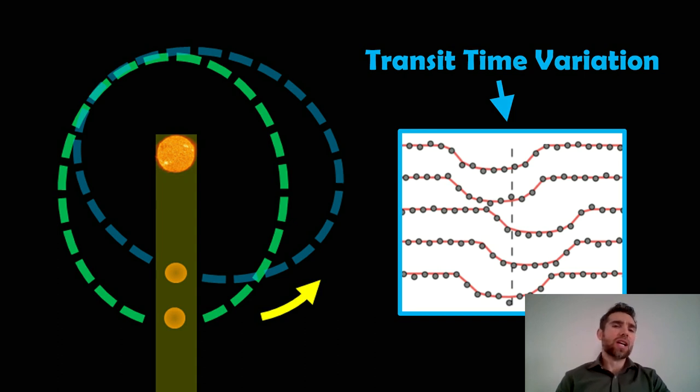It's due to the precession of the elliptical orbit. So if the planet is on an orbit that is elliptical, that elliptical orbit will then process around 360 degrees. And as the orientation changes relative to us, it can actually change when the next transit occurs. So the time between each transit can change, as well as the time it takes to actually pass in front of the star.